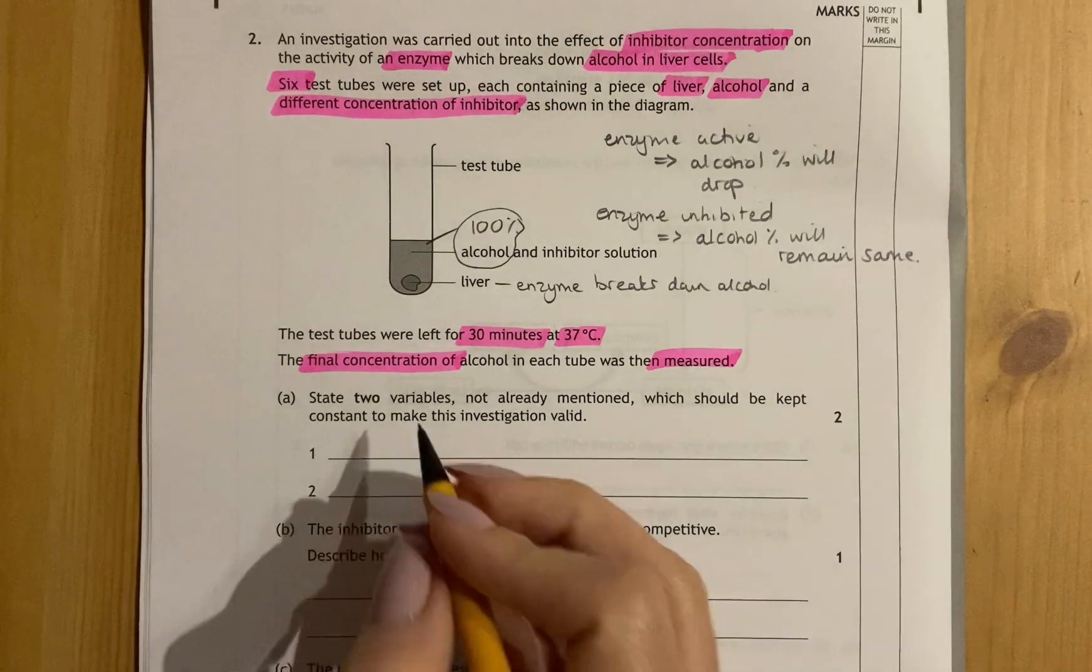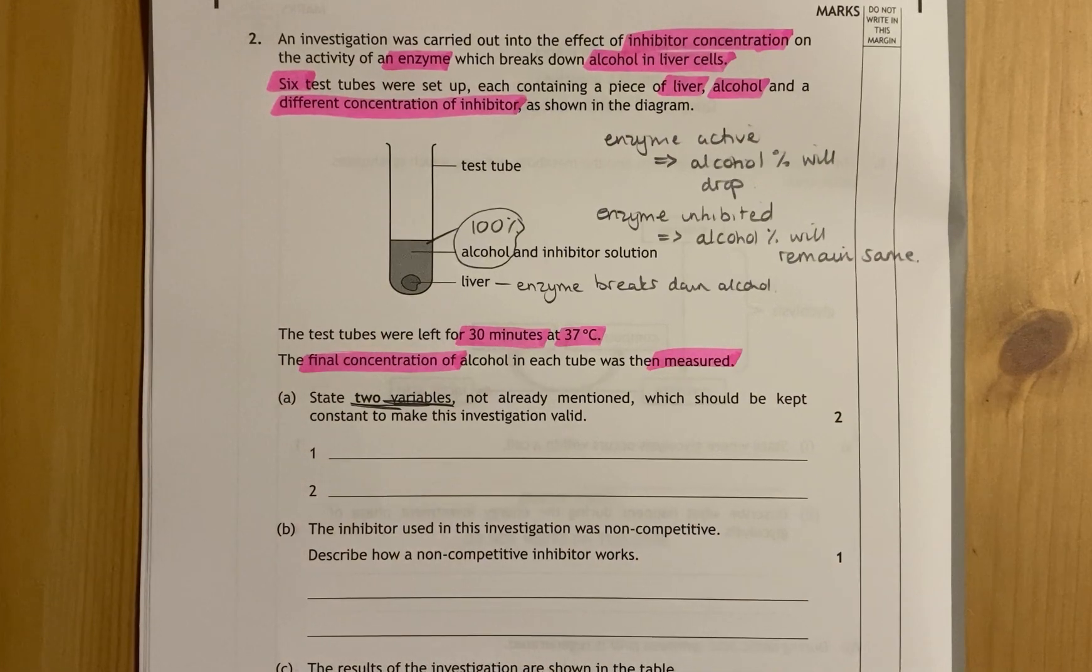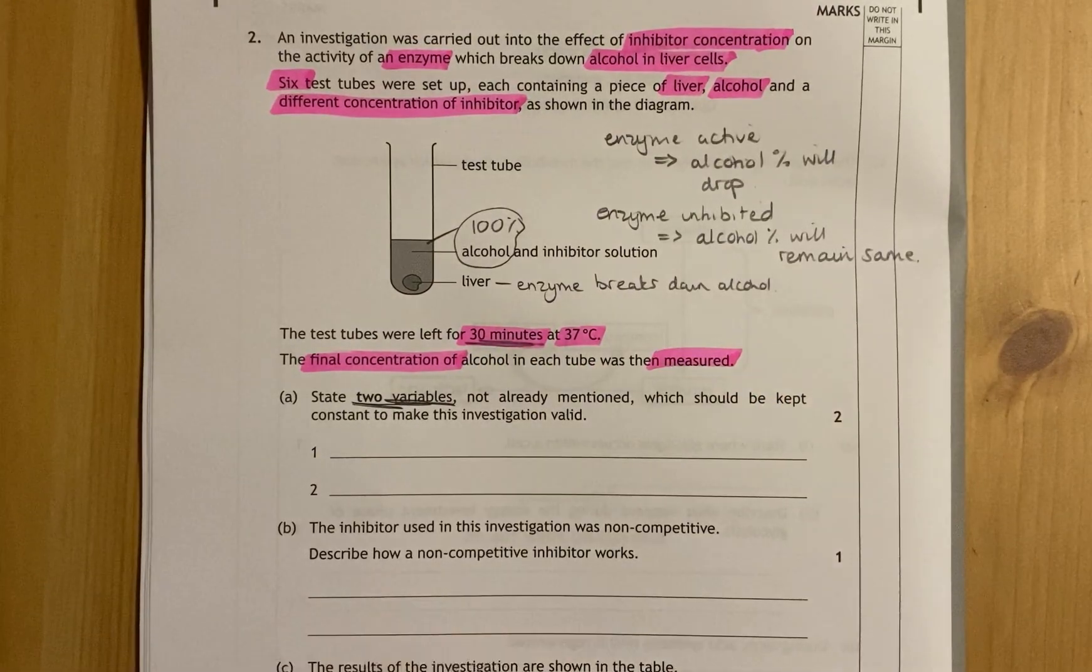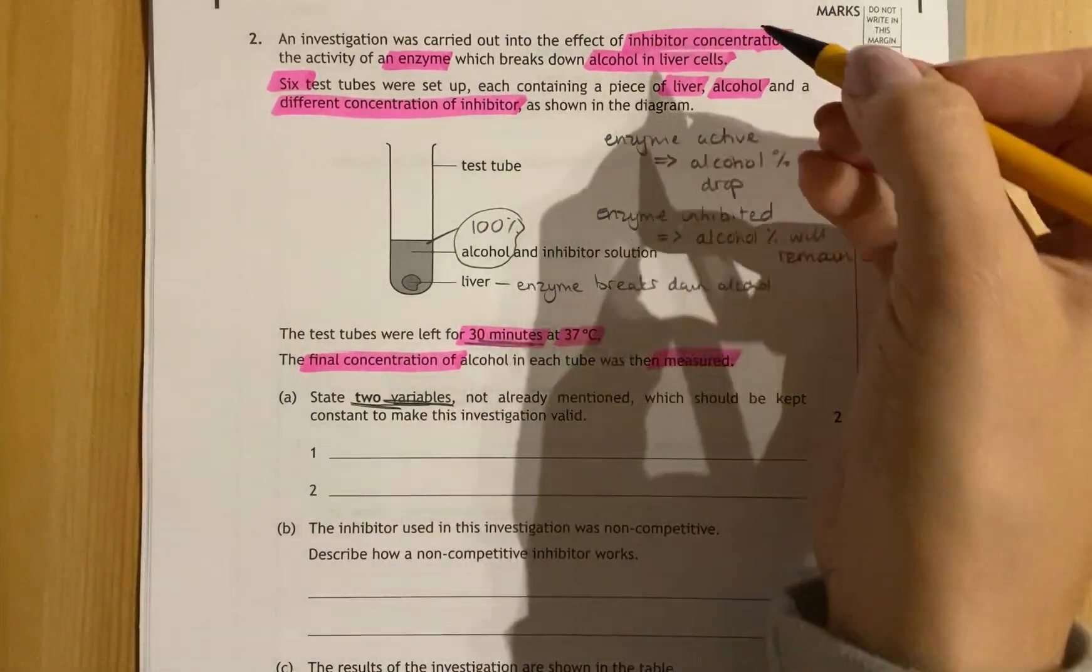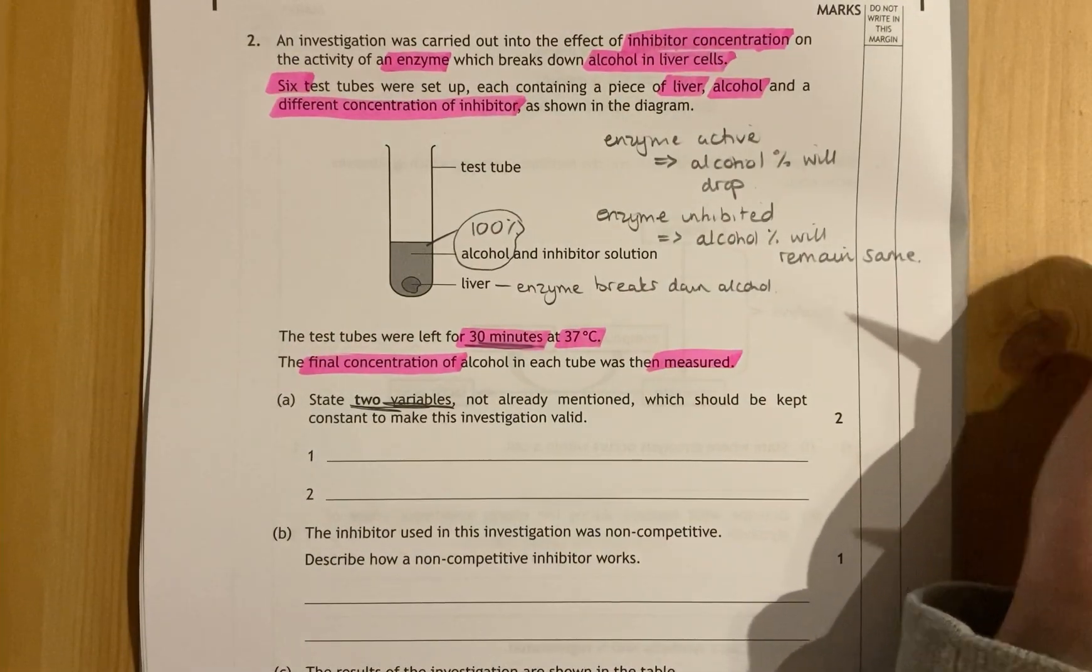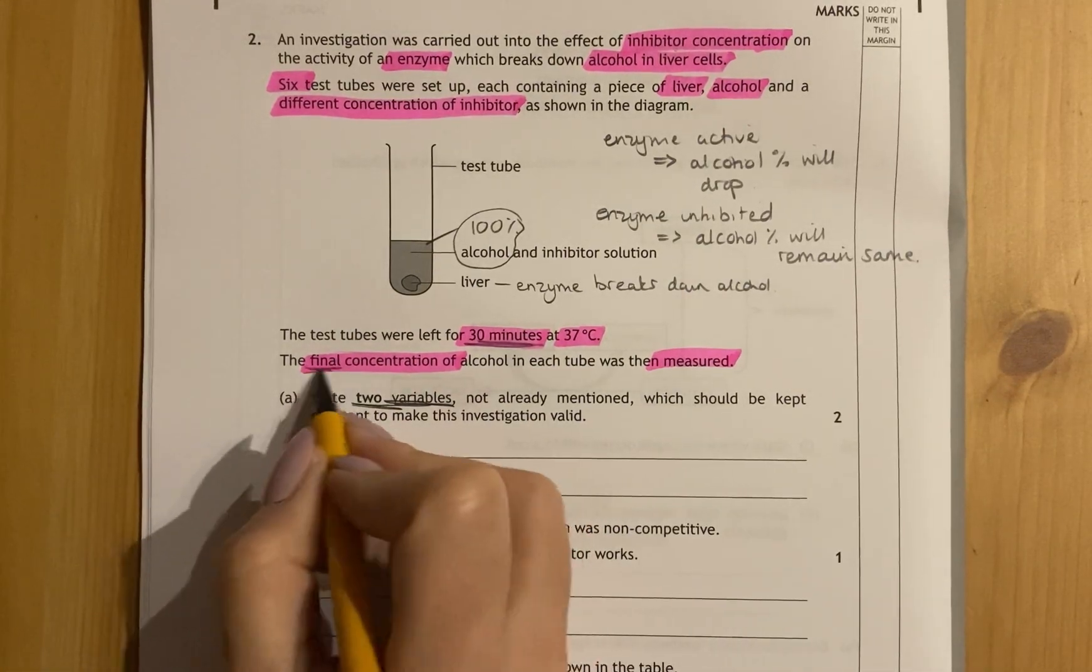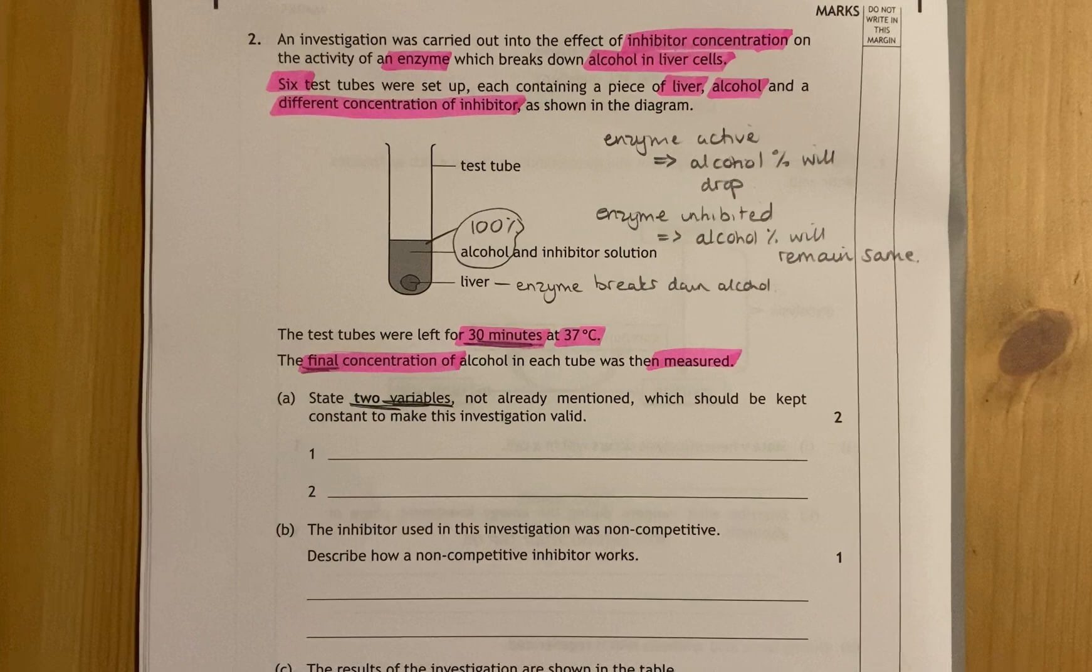Now we've kind of understood what's going on in this experiment. Now the first part of this question has to state two variables, not already mentioned, so therefore not discussed already, that should be kept constant in this. Now they've already stated the duration of that experiment, so you cannot use that. They've already stated temperature, so you cannot use that. And they've already stated that they are changing inhibitor concentration, so you can't use that. And as a last one they are measuring the final alcohol concentration, so you can't use the final alcohol concentration.